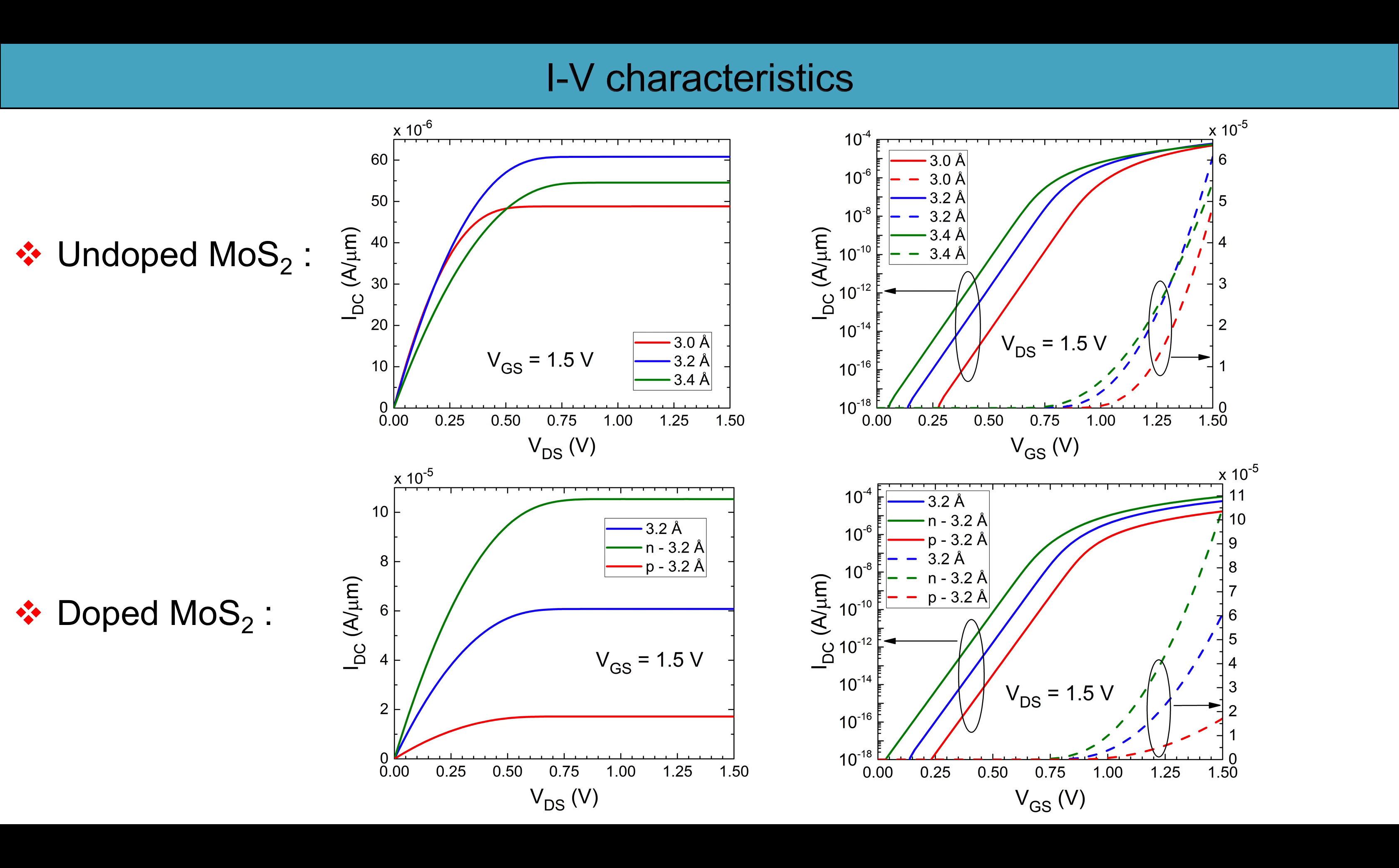Now we plot the transfer characteristics and the drain characteristics of the MISFET structure. The transfer characteristics clearly points the threshold voltage increment of the MISFET with decreasing d1. However the subthreshold slope remains constant with a swing of 60.48 millivolt per decade for all the cases.